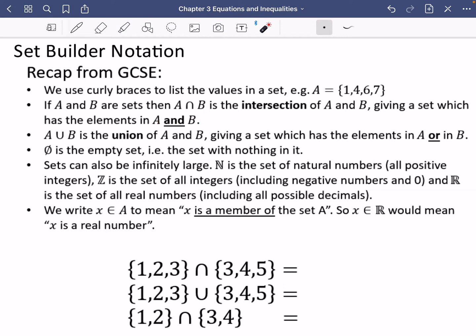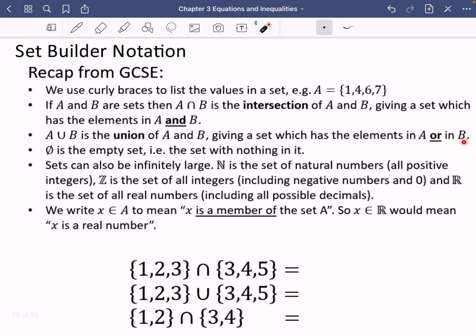Then we have A union B is the union of A and B, and it gives a set which is the elements that are in either A or in B. If you ever see this circle with the line, it is the empty set. There's nothing inside it.